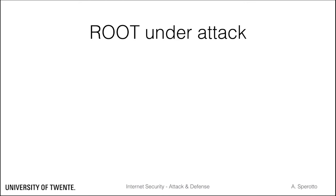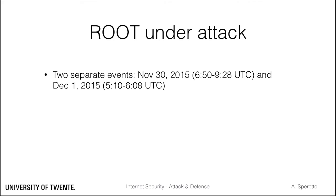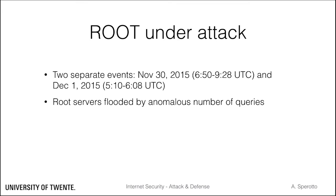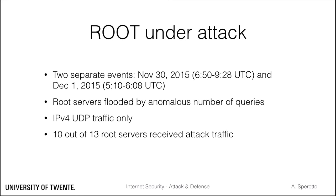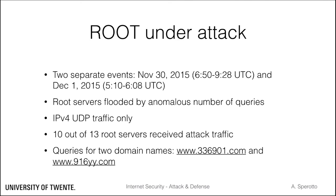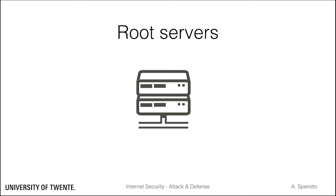There were actually two separate events, one on November 30 and one on the 1st of December, but the modus operandi was the same. The root servers received an anomalously high number of queries, on IPv4 and UDP. Analysis of the traffic shows that all the queries were for only two domains. Researchers at Verisign, who have analyzed the attack, report that 10 out of the 13 root servers received attack traffic. We have already mentioned that a root server might receive billions of queries per day.